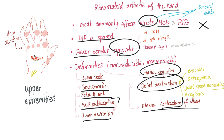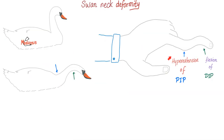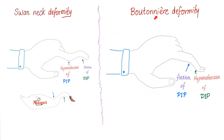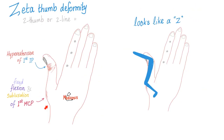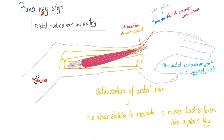Flexion contractures of the elbow can occur. Note the difference: contraction is of muscles, but contracture is of a joint. On visual review: this is the swan neck deformity, the boutonnière deformity, and the Z-thumb deformity. The piano key sign is not a problem in the fingers — it is a problem in the distal radio-ulnar joint.